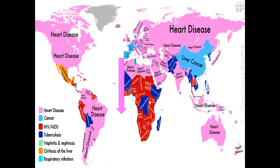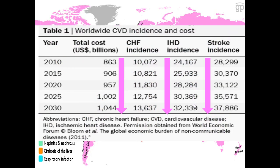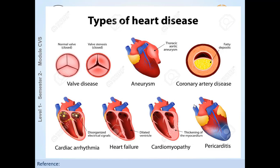Another map shows how heart disease is very common in Egypt. The global burden is increasing — the cost of cardiac disease is expected to increase by 2025 and 2030. Cardiovascular disease will affect the economy of the whole world. Prevention is better than cure. You have to prevent cardiac disease, including chronic heart failure, ischemic heart disease, and even stroke, which is part of atherosclerotic cardiovascular disease.